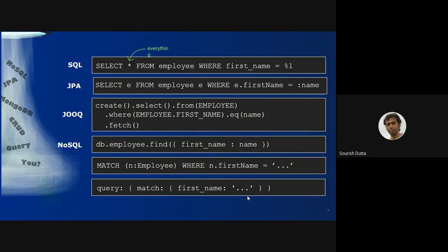In NoSQL, if we write the query into MongoDB format, you start with DB followed by the particular collection name. Then it has a find where the first name equals whatever name you submit. Or you can use match to match employees where the employee first name equals something, or you can combine query and match together with the first name. So there are different ways to query.